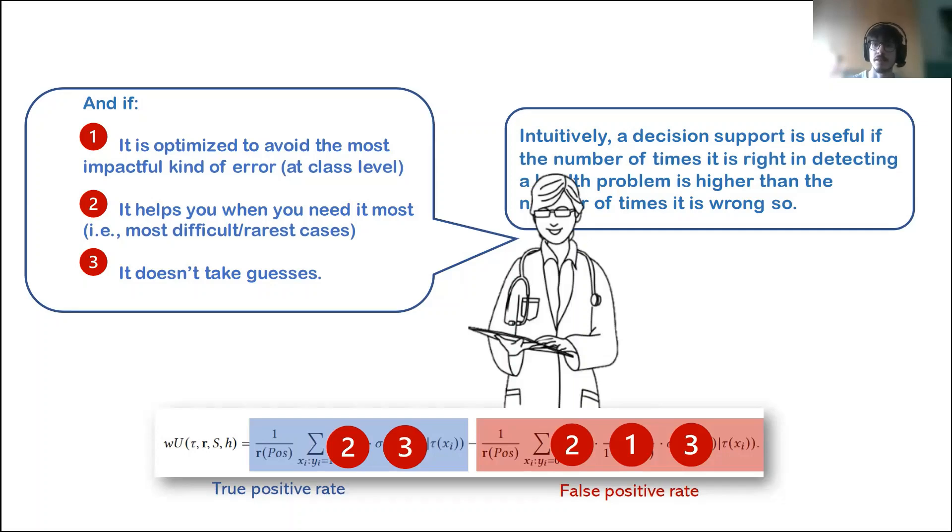For example, in the case of a medical setting, it may happen that misclassifying a patient to be healthy when instead he has a given deadly disease is more impactful than the converse case.